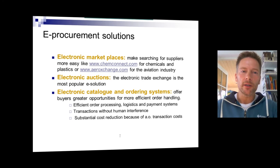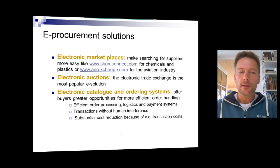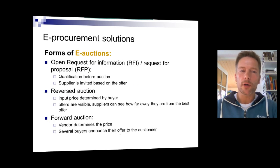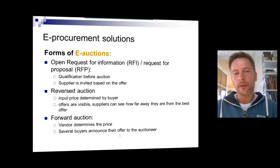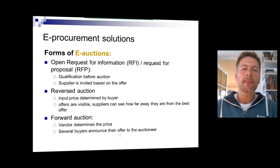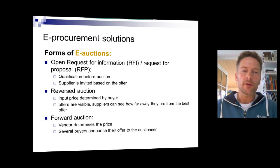Moving to e-procurement solutions: there are various marketplace solutions including different types of auctions and electronic catalogs. These are not used for all product groups. When considering the Kralik portfolio model, e-auctions are more suited to routine or leverage type products. There are different auction formats — reversed, forward — and different ways of handling those auctions.